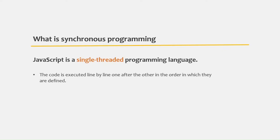For example, let's say we are making an HTTP request to the server to get some data. This HTTP request and response cycle might take some time to complete. So if we are making an HTTP request using synchronous code, the next line of code will be executed only after we have received the response from the server. So we can say that synchronous code is blocking in nature.